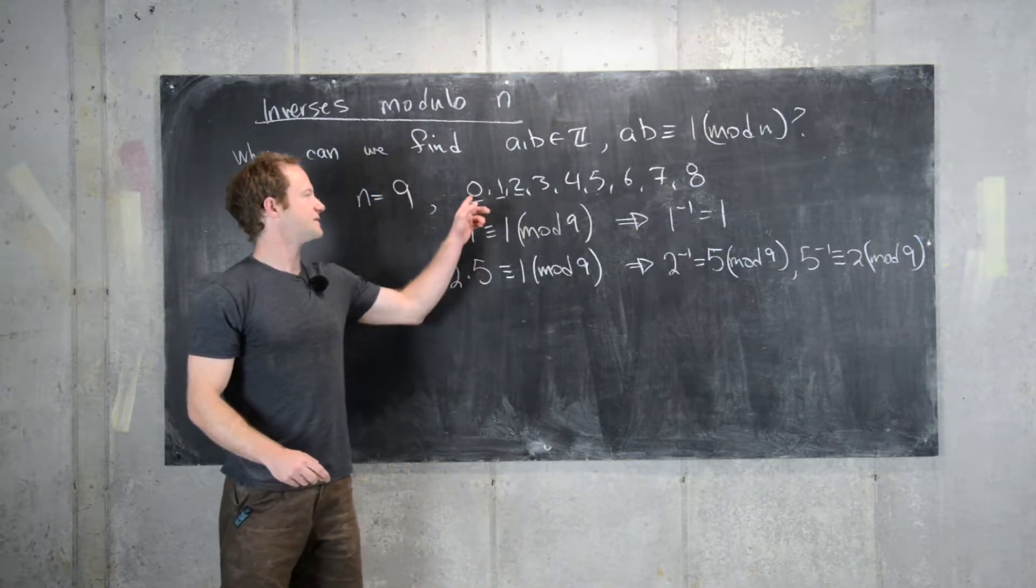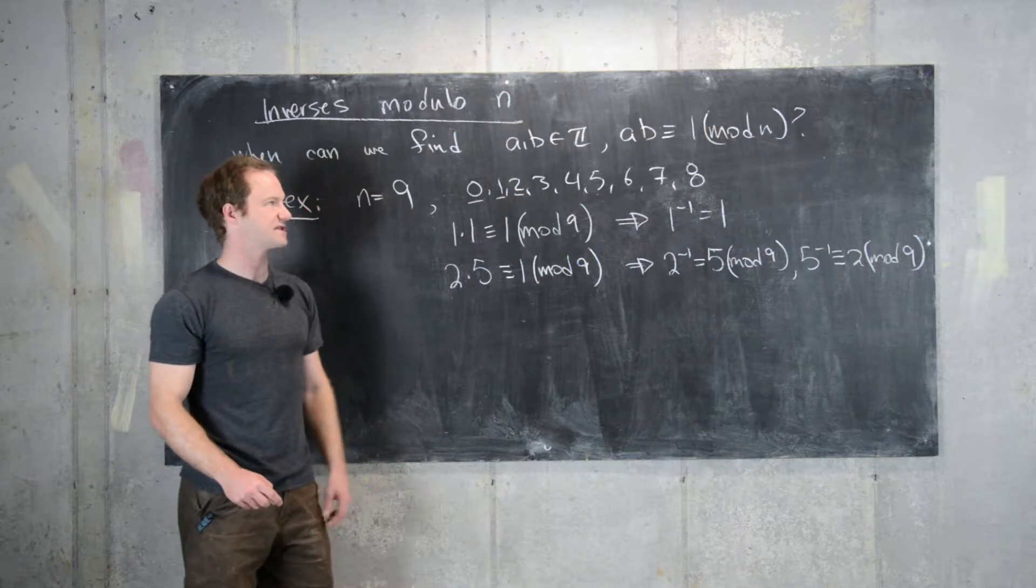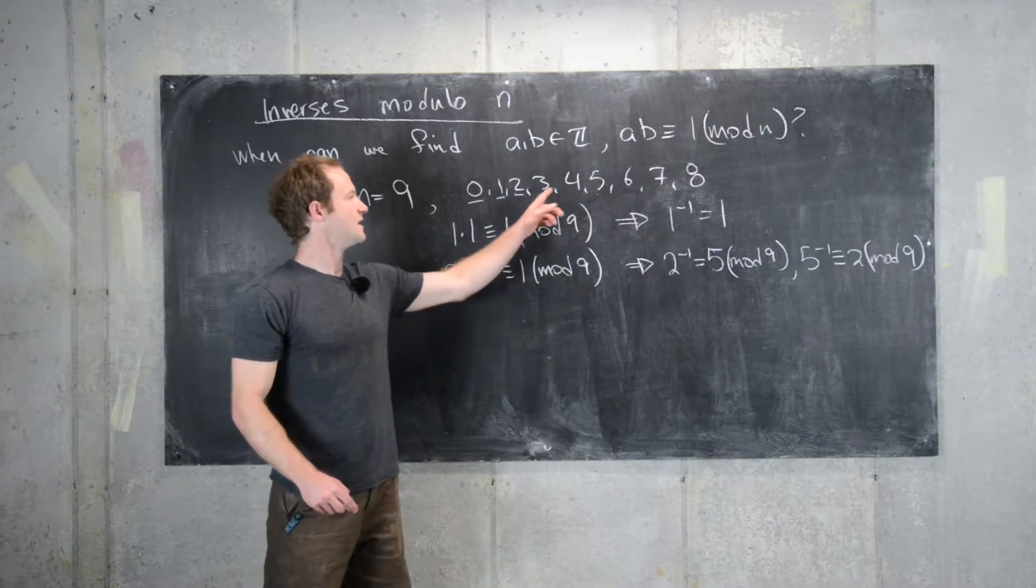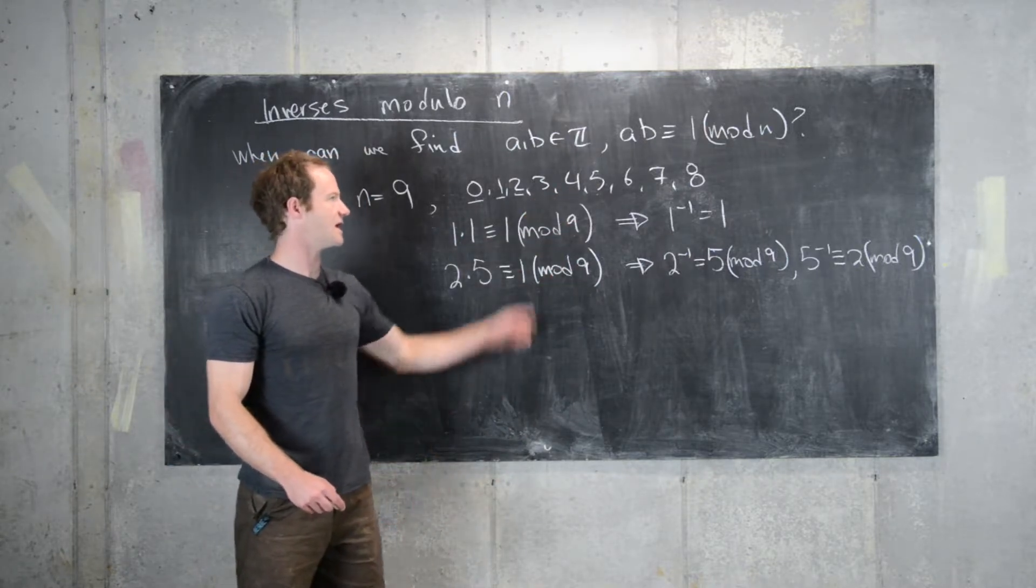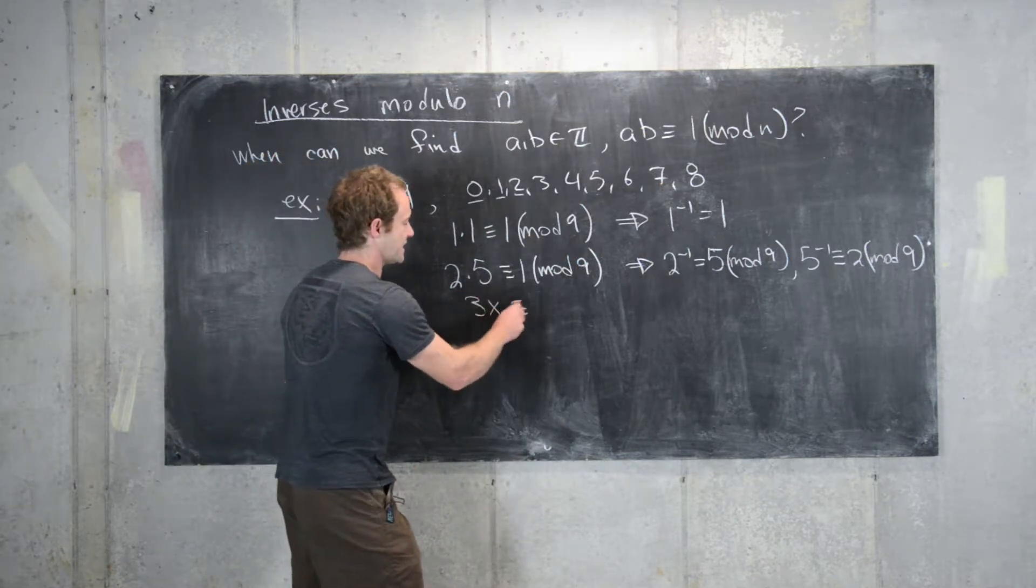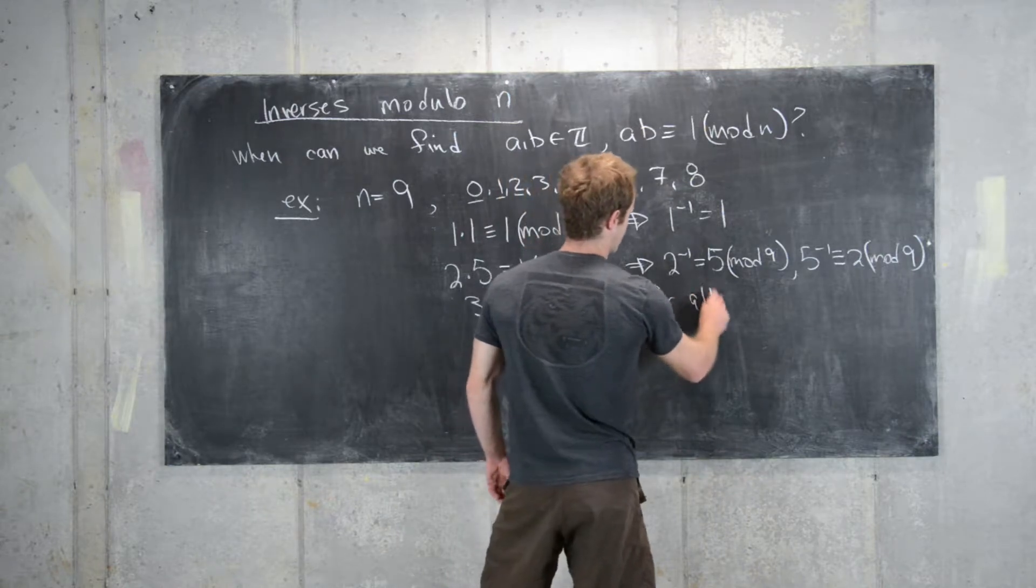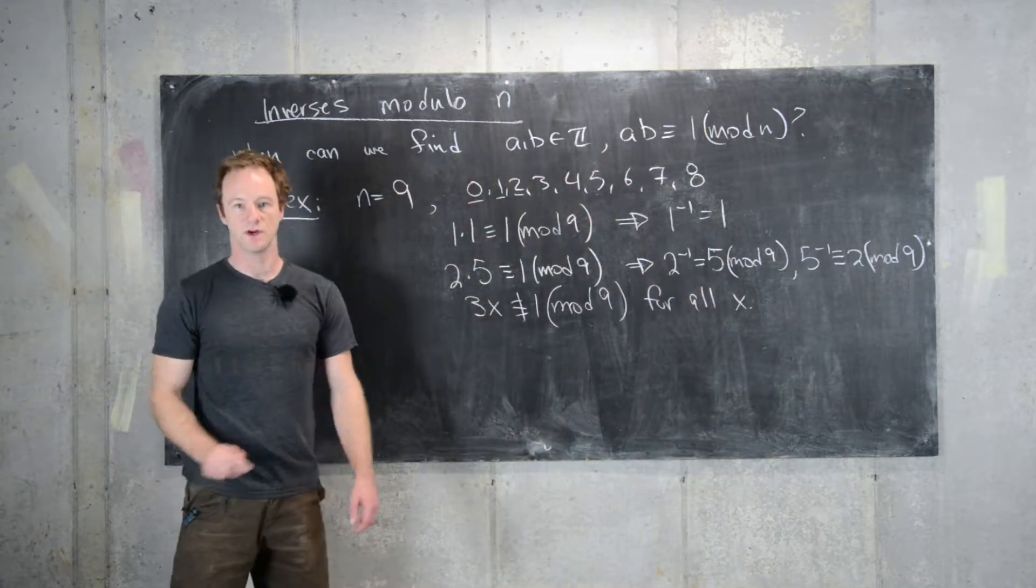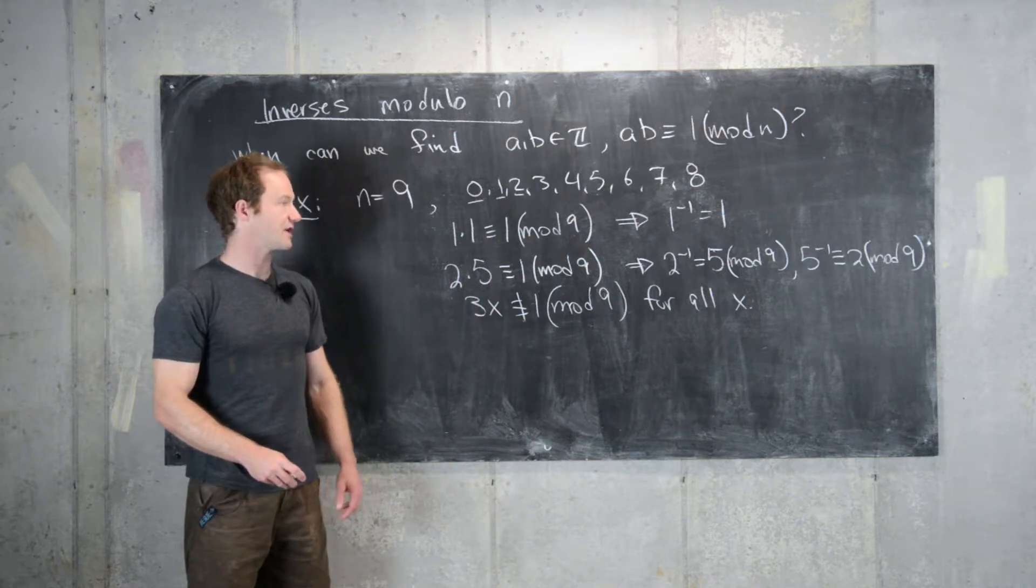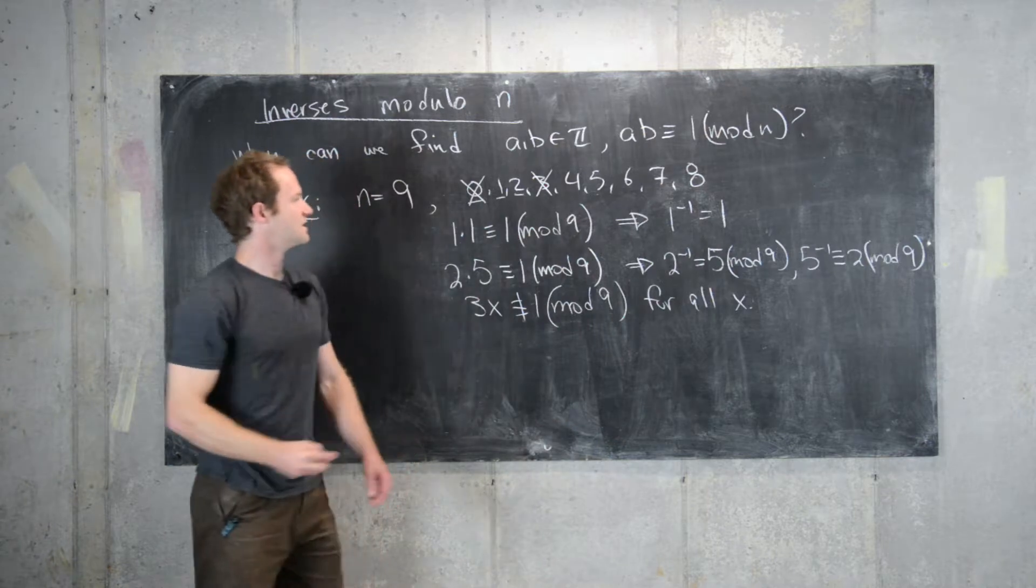So let's do 3 times 0 is 0. 3 times 1 is equal to 3, that's not equal to 1. 3 times 2 is equal to 6, again that's not 1. 3 times 3 is 9, that's 0 mod n. 3 times 4 is 12, which is 3 mod n. And now we can keep going. And what you'll notice is that 3 times x is not congruent to 1 mod n for all x. So we'll prove this, why this is the case in just a second. But needless to say, 3 will not have an inverse mod n. So 0 doesn't, 3 doesn't.